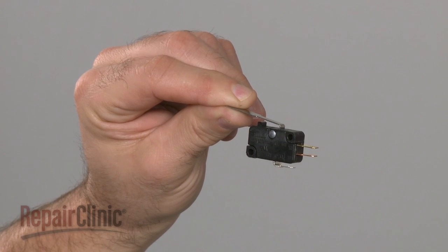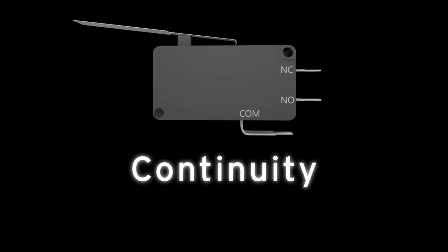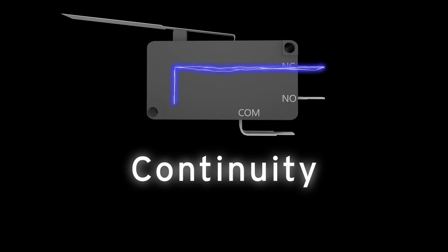Since you can't always tell if a dehumidifier switch has failed simply by looking at it, you'll need to perform a continuity test. A continuity test will determine if a continuous electrical path is present in the switch.